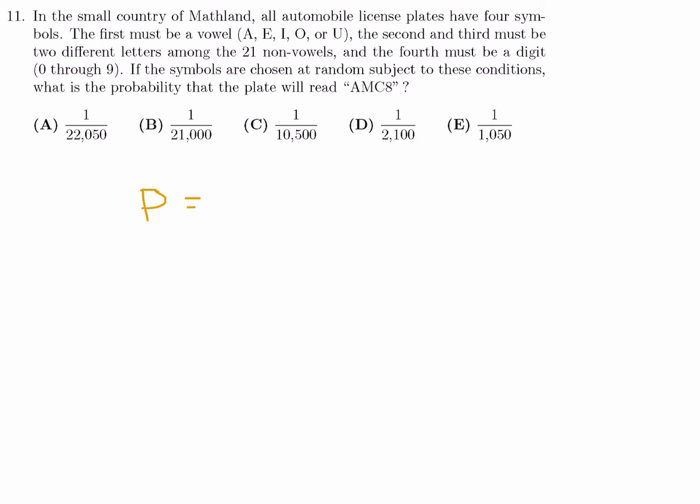Probability is always some fraction. The denominator is the total, and the numerator is the specific condition. Our specific condition is AMC 8, and there's only one way of making that. Now we have to figure out what is the total. Total number of ways of making these plates.